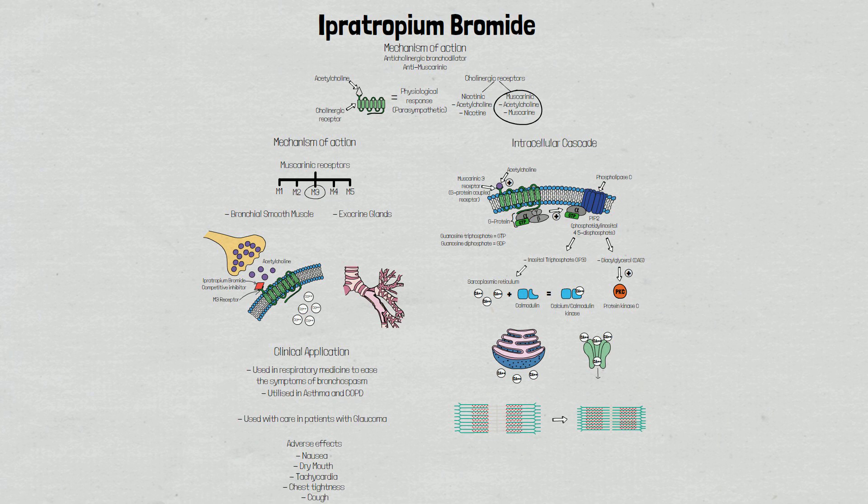Ipratropium bromide is a competitive inhibitor of acetylcholine, inhibiting parasympathetic bronchoconstriction. This leads to bronchodilation and an increase in airway diameter, making it easier to breathe.